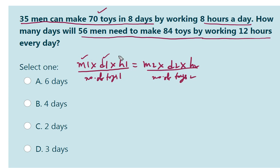Here M1 is given, D1 is given, H1 is given, number of toys 1 is given, M2 is given, H2 is given, number of toys 2 is given. We need to find D2.